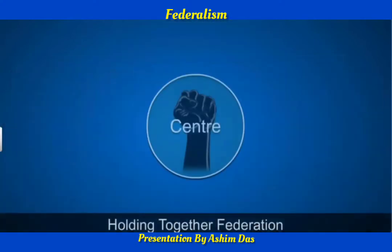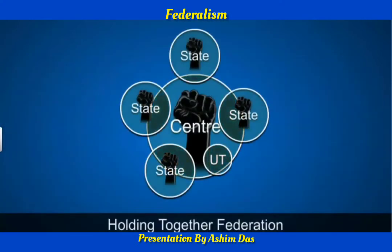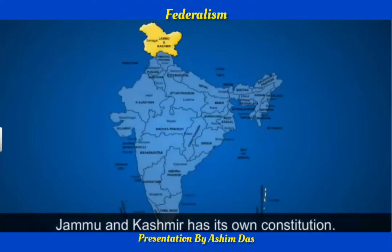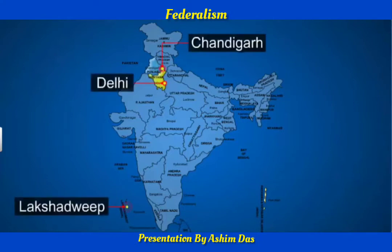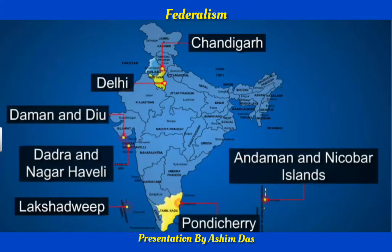A holding together federation does not give equal powers to its constituent units, meaning all states of the Indian Union do not have identical powers. States like Jammu and Kashmir enjoy a special status with their own constitution, and many provisions of the Indian constitution are not applicable there. On the other hand, some units like Chandigarh, Lakshadweep, or Delhi enjoy very little power. These are known as union territories, and since they are too small to be independent states or merge with existing states, they are governed directly by the central government.